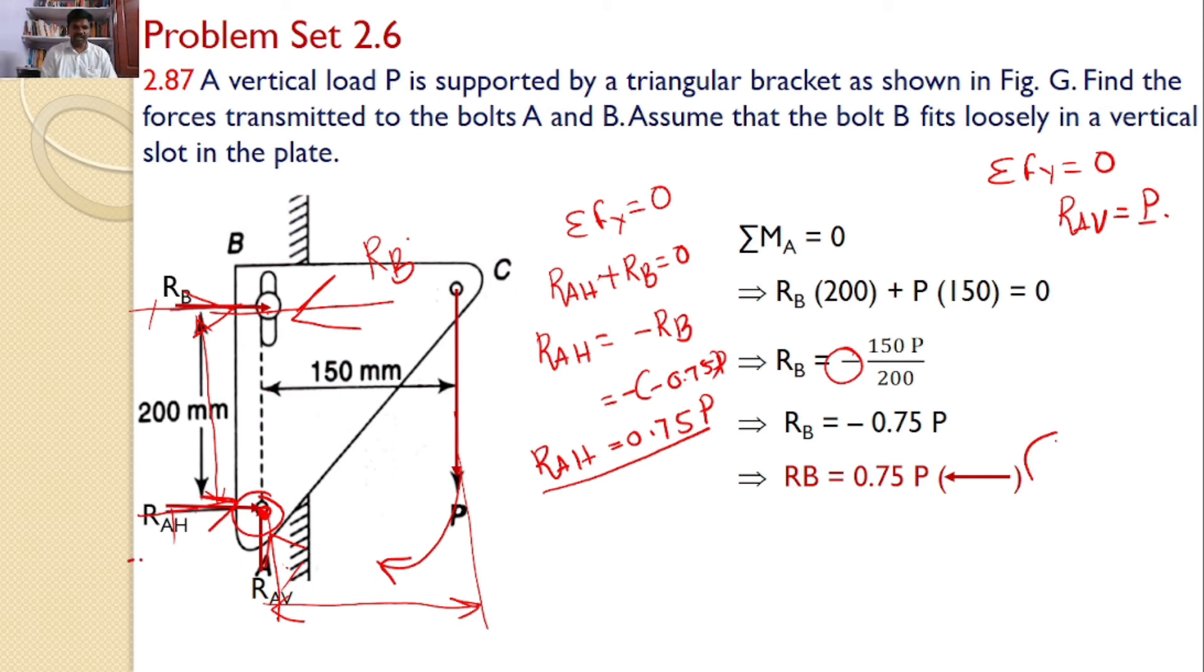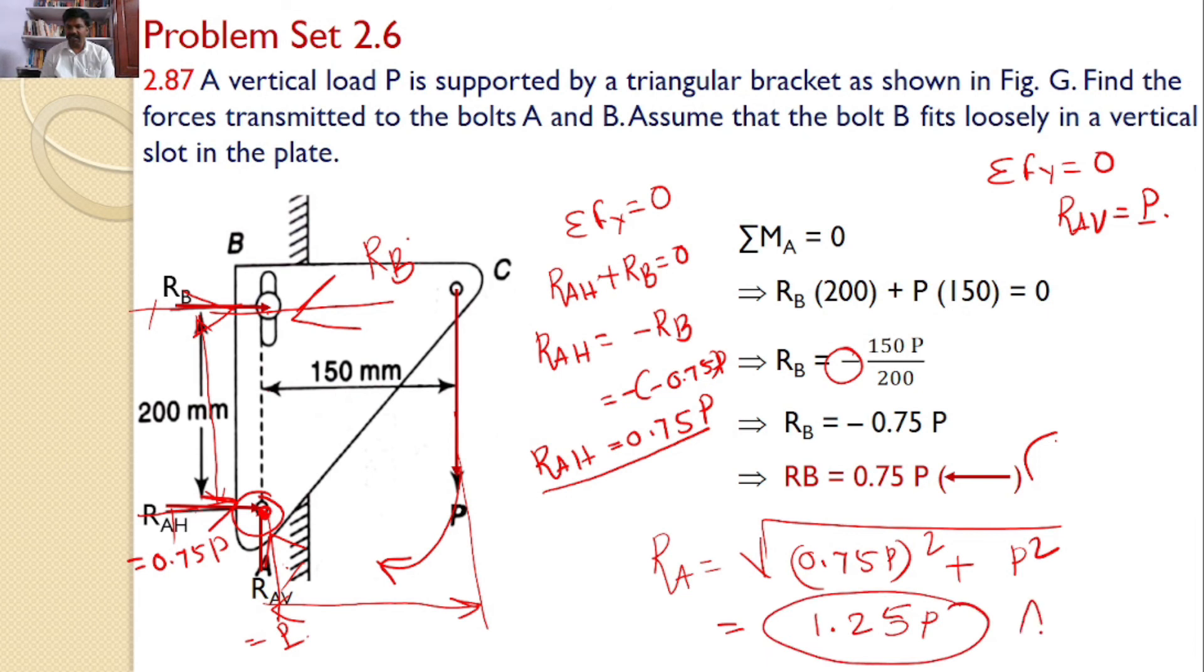So, RAH equals 0.75P, RAV equals P. Hence, the reaction at A equals square root of RAH squared plus RAV squared. That is 0.75P whole squared plus P squared. That equals 1.25P is the reaction at A, which is the answer for the given problem.